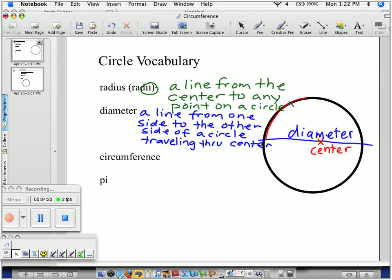A radius is a line from the center to any point on a circle.